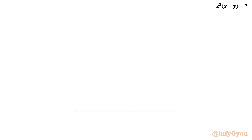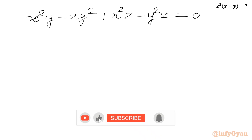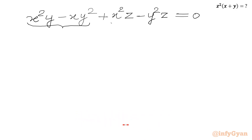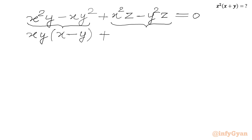Now we will take common factors. We take xy common from the first two terms, giving xy times x minus y in the bracket. And z is common from the last two terms, giving z times x squared minus y squared equal to 0.